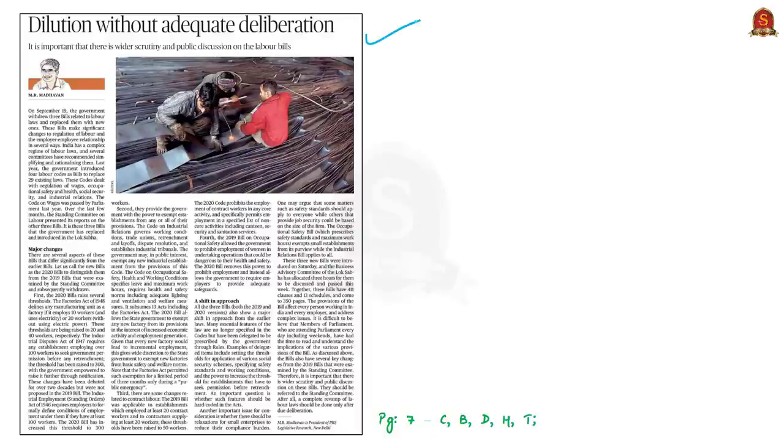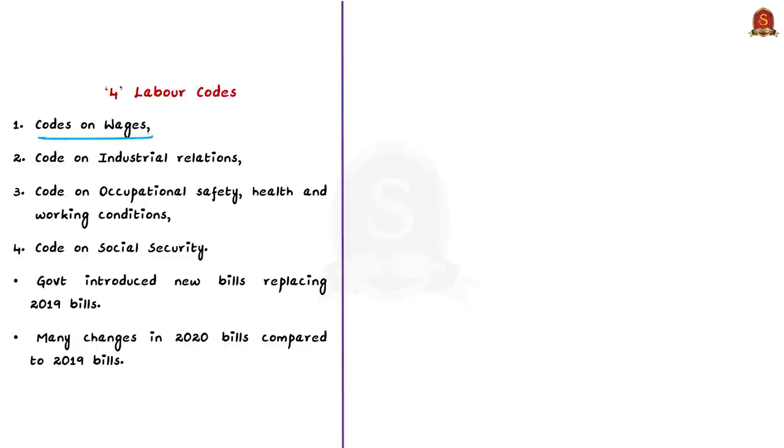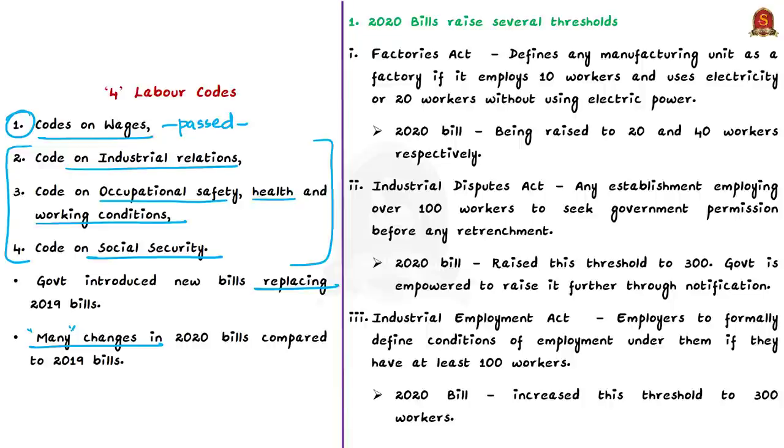This OPED editorial column talks about new bills introduced in parliament related to labor laws. In recent years, government has come up with four labor codes to replace many labor laws in the country: code on wages, code on industrial relations, labor code on occupational safety, health and working conditions, and labor code on social security. The code on wages was passed by parliament last year and received presidential assent. Over the last few months, the standing committee on labor presented its reports on the other three bills. It is these three bills that the government has replaced and introduced in Lok Sabha in 2020. There are many changes in the 2020 bills compared to bills introduced last year.